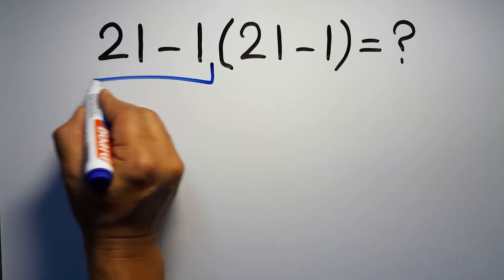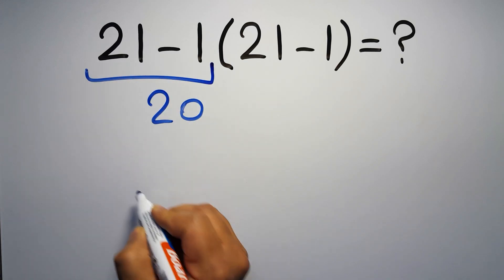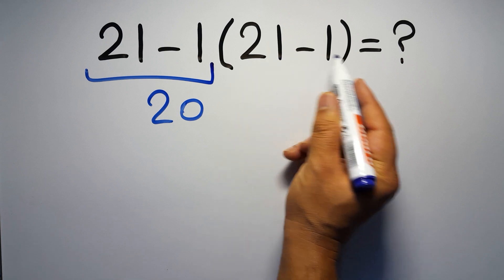21 minus 1 gives us 20, and again here inside this parentheses we have 21 minus 1.